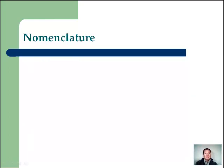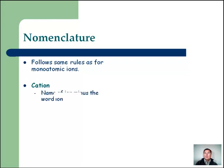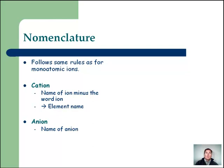Naming these is simple — it follows the same rules as binary ionic compounds. You take the name of the cation, and then the name of the anion. If it's a polyatomic anion, it keeps its polyatomic name from the sheet. If it's monatomic, it gets the -ide ending. Spelling counts — if you misspell one of the polyatomics because you're too lazy to copy it off the sheet correctly, I will mark it wrong.